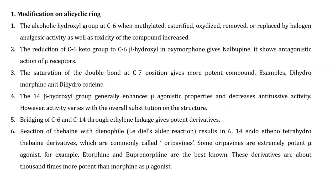First is modification on the alicyclic ring. The alcoholic hydroxyl group at the 6-position, when methylated, esterified, oxidized, removed, or replaced by halogen, analgesic activity as well as toxicity of the compound increase. The reduction of the 6-keto group to 6-beta-hydroxyl in oxymorphone gives nalbuphine, which shows antagonist action at the mu receptor. The saturation of the double bond at the 7th position gives more potent compounds, e.g., dihydromorphine and dihydrocodeine.